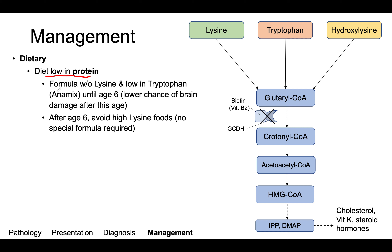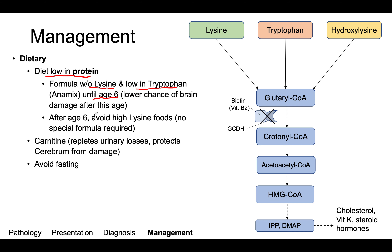The special formula these patients need contains no lysine and is also low in tryptophan. This is typically given until age six years, because there is a lower chance of brain damage after this age and these dietary restrictions can be relaxed. Carnitine supplementation is also recommended to replete losses due to the shunting and urinary losses, and it is thought to protect the brain from damage from glutaric acid.